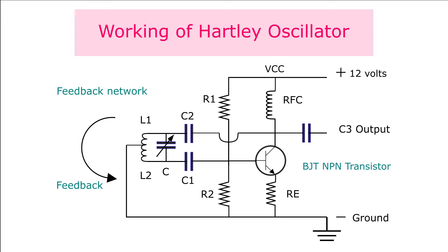The mutual induction between L1 and L2 transfers energy from the collector circuit to the base of the transistor. The oscillations at L1 are transferred to L2 and this causes a 180 degrees phase shift. The energy from the tank circuit is fed directly to the base of the transistor through a coupling capacitor C1. The NPN transistor with a common emitter configuration amplifies the signal and inverts it by 180 degrees. The oscillations at the LC tank circuit and the output are in phase.